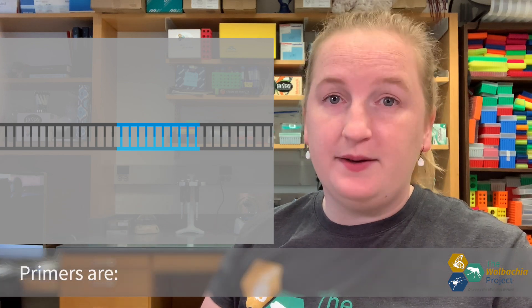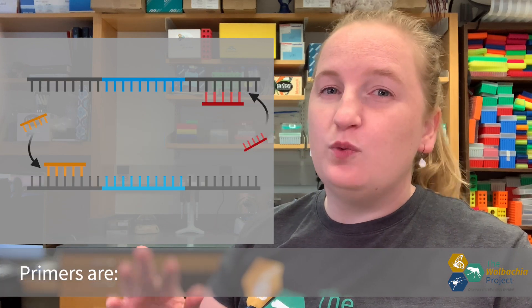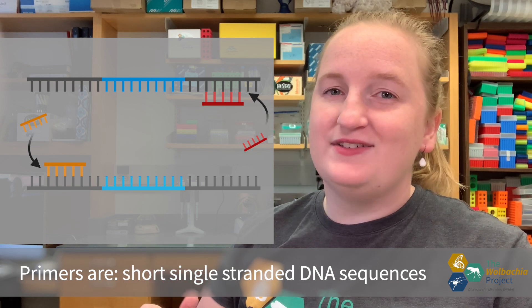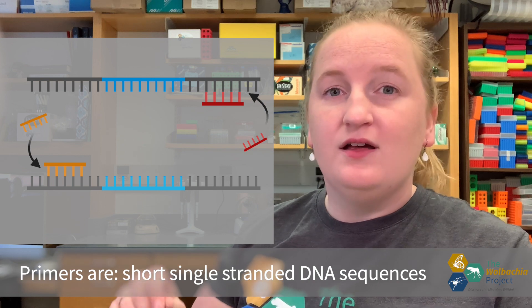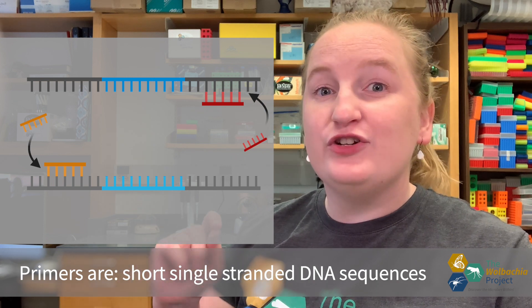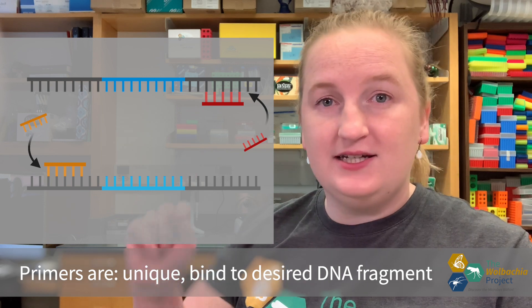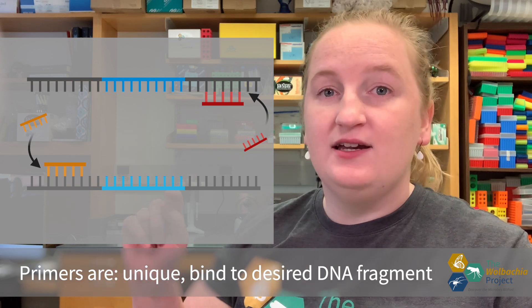So how do we amplify just this region? We use primers. Primers are about 20 base pairs long, and they're fragments of DNA that I like to think of as the control find of PCR. They're long enough that they're unique and will only bind in one location. As bind to Ts, Cs bind to Gs, and vice versa.